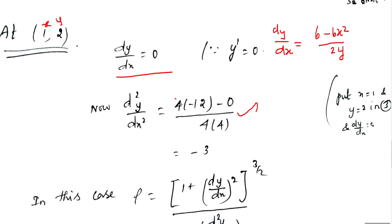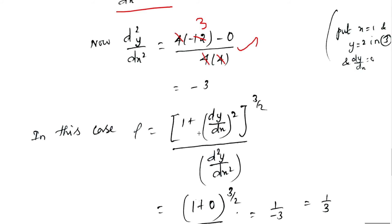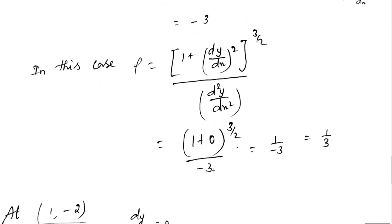Simplifying, the 4s cancel and then 4 and 12 cancel to give 3, so d²y/dx² = -3 at point (1, 2). Applying the radius of curvature formula ρ = [1 + (dy/dx)²]^(3/2) / |d²y/dx²|: numerator is (1 + 0)^(3/2) = 1, denominator is |-3| = 3, giving ρ = 1/3.